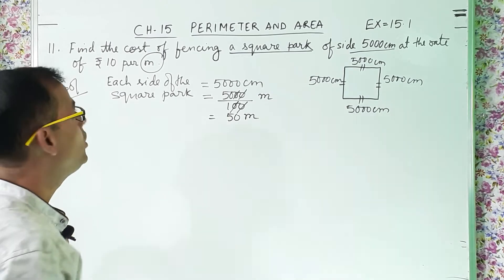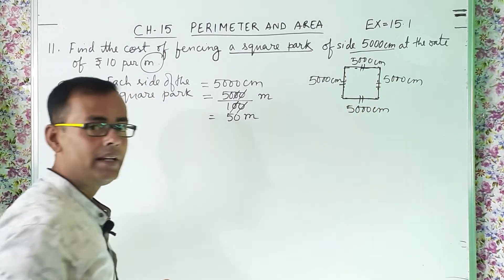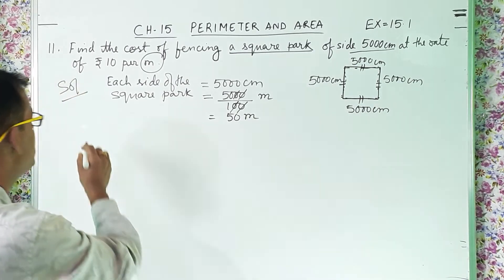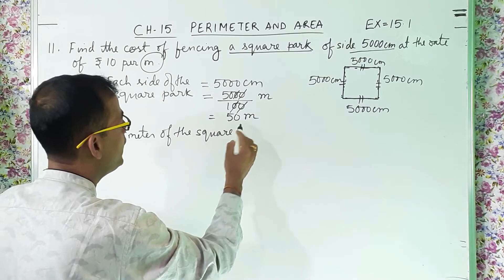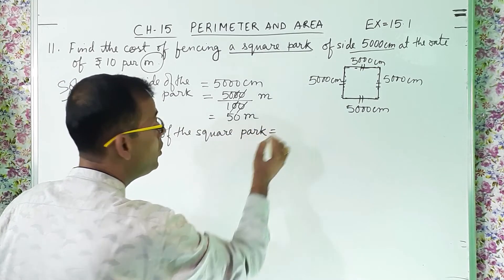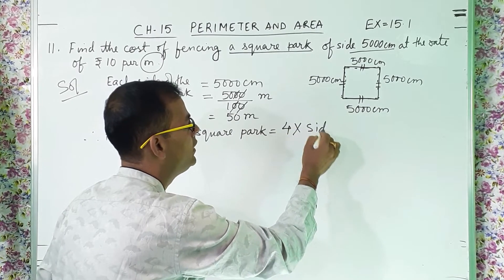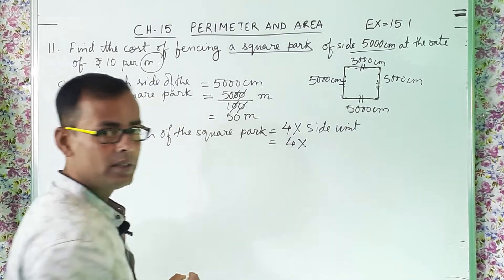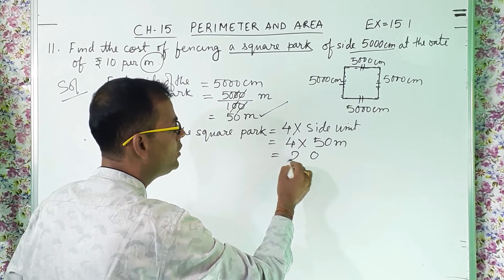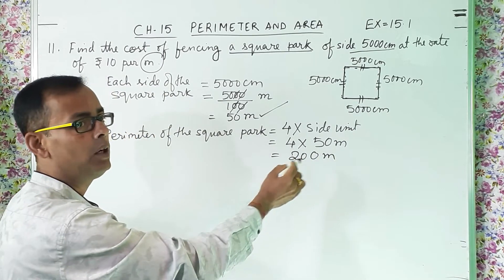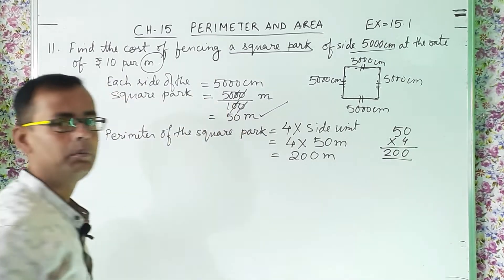Cost of fencing means we will fence along the borders — all four sides. So we have to find the perimeter. Therefore, perimeter of the square park: the formula is 4 into side. Putting the value: 4 into 50 meters. Multiplying: four zeros are zero, four fives are 20, so the perimeter is 200 meters.